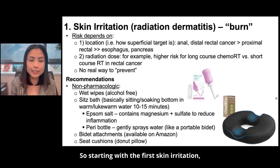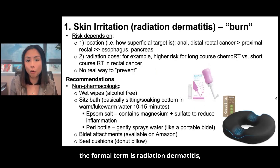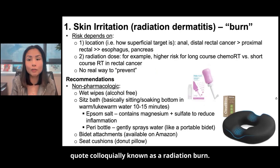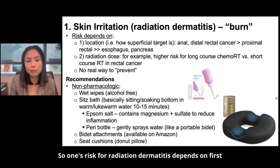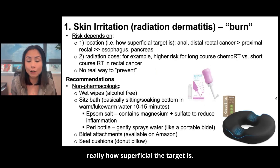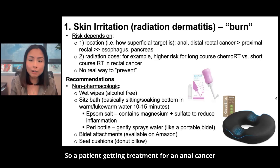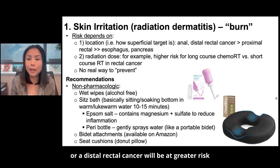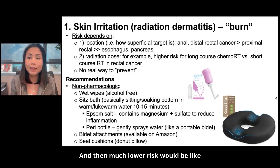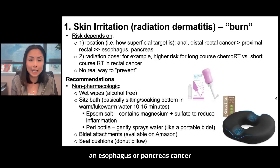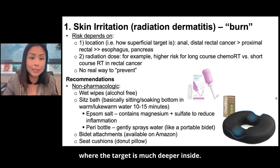Starting with the first — skin irritation. The formal term is radiation dermatitis, colloquially known as a radiation burn. Who is at risk? One's risk depends on first the location of the radiation, really how superficial the target is. A patient getting treatment for anal cancer or distal rectal cancer will be at greater risk than for proximal rectal cancer, and much lower risk for esophagus or pancreas cancer where the target is much deeper inside.